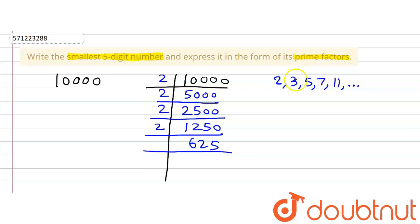So we move to the next prime number, which is 3. Is 625 divisible by 3? No, it's not. So the next prime number is 5, and we divide 625 by 5.